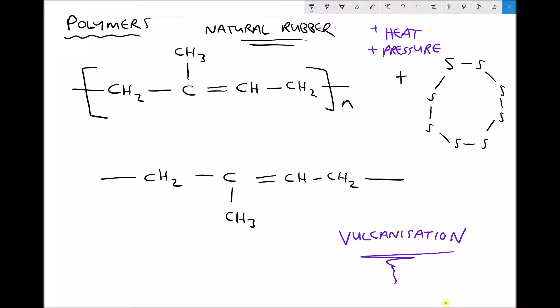We're changing the conditions under which this reaction is occurring. Add heat, add pressure, add sulfur. When vulcanization happens the rubber becomes very hard so we end up with a hard, much more rigid, less elastic material.